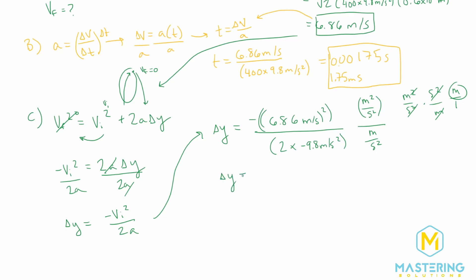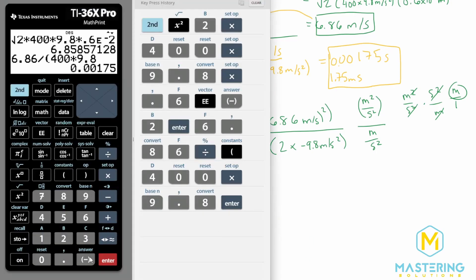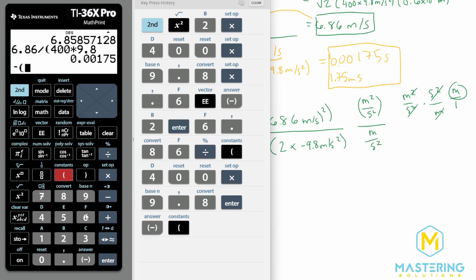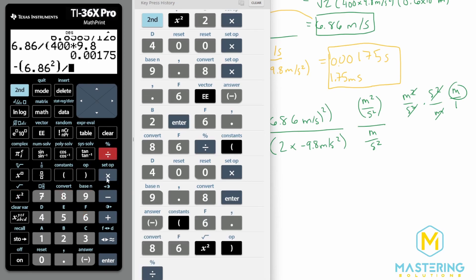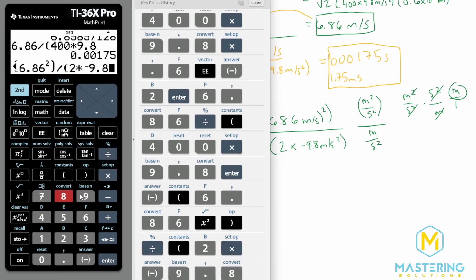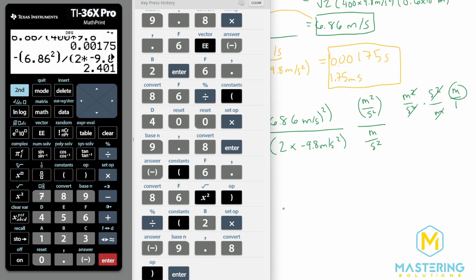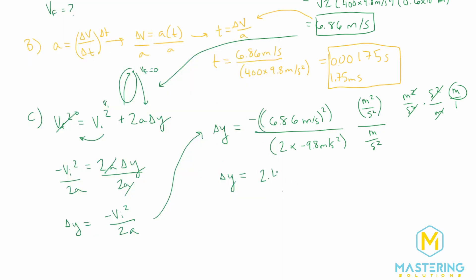So delta Y in this case will be equal to a negative 6.86 squared, and then we'll divide it by 2 times a negative 9.8. So we have the final delta Y is 2.4 meters for how high the beetle went, ignoring air resistance.